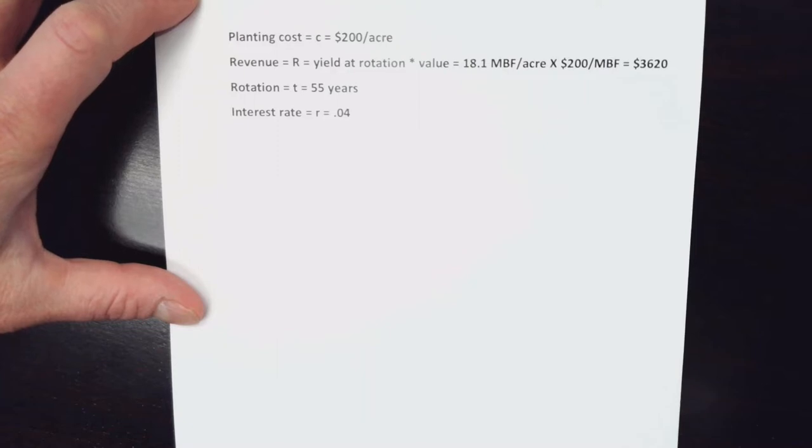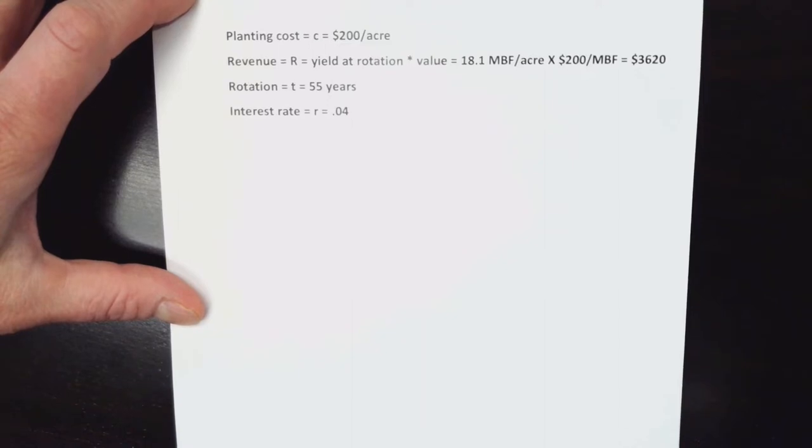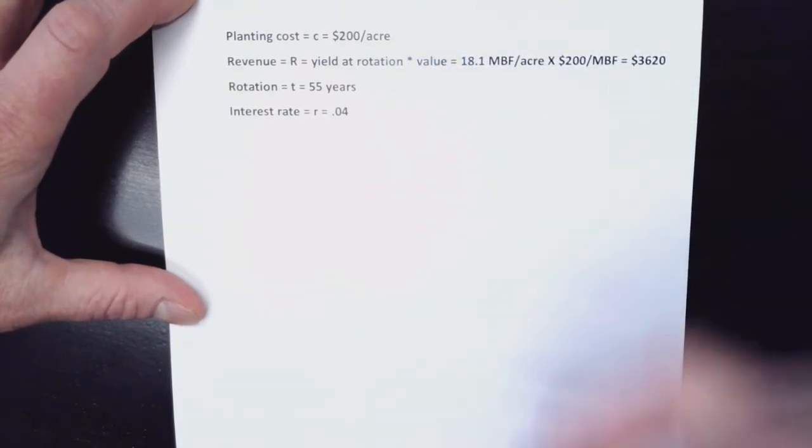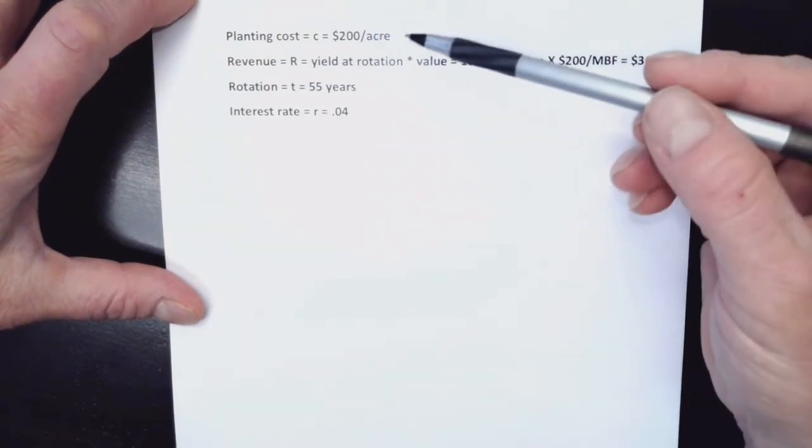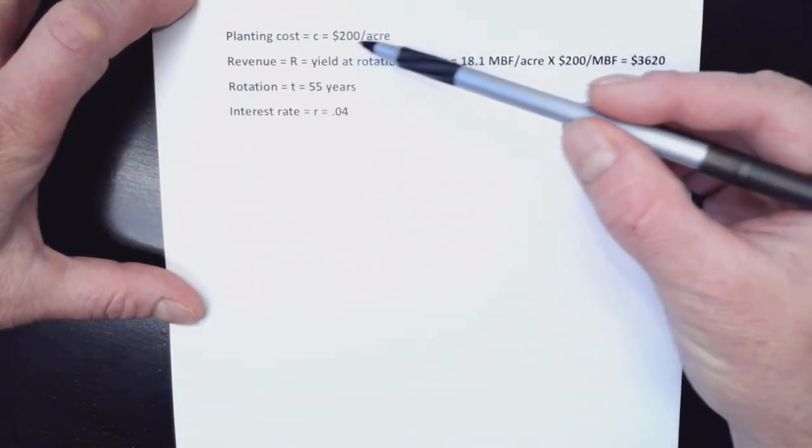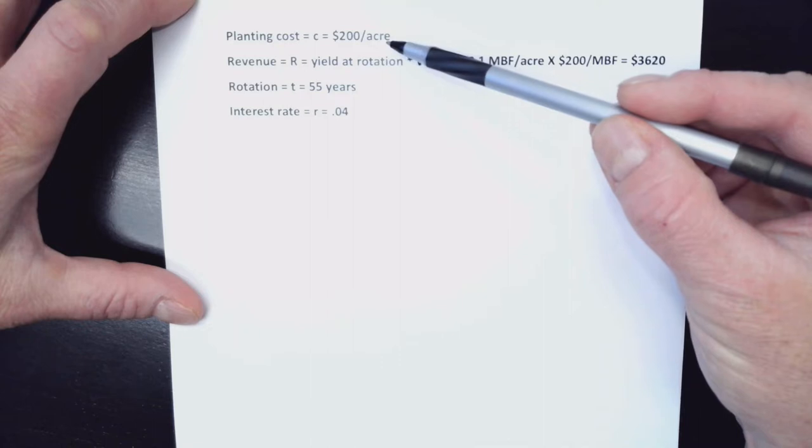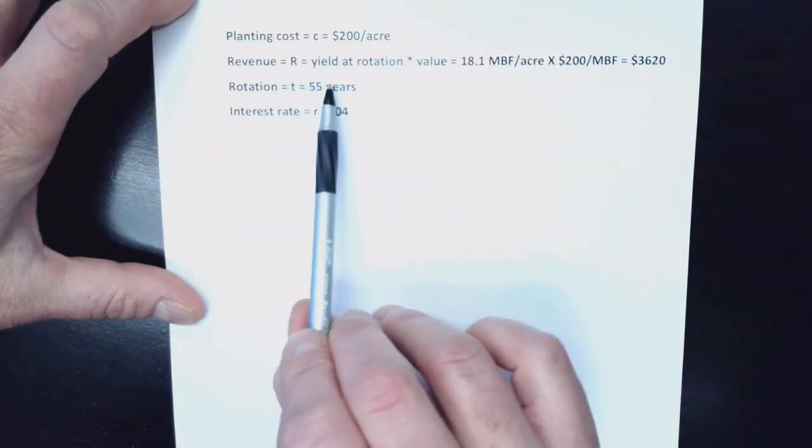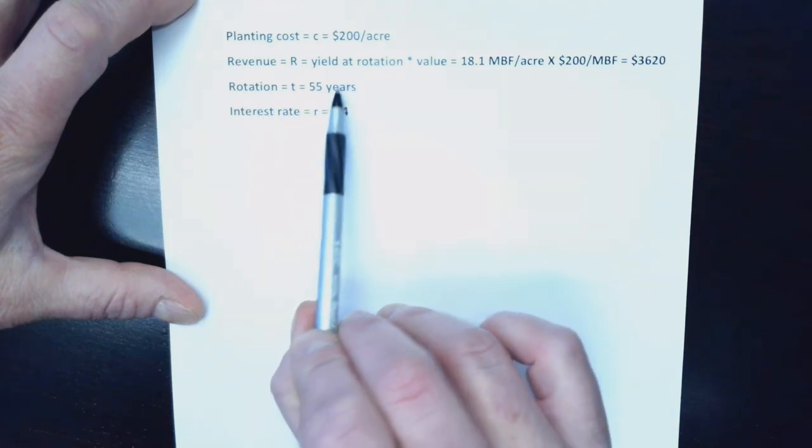What we're going to look at is the bare land value, the soil expectation value of a single acre of forest, and we have this set of criteria. This is on the PowerPoint, one of the slides there. We had a cost of planting that was going to be $200 per acre. At revenue at rotation,